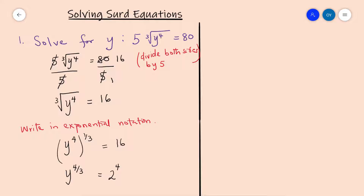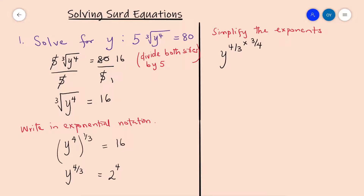The next step is to simplify the exponent. We multiply the power 4 over 3 by its reciprocal, 3 over 4, doing this on both sides. So we have 2 to the power of 4 multiplied by 3 over 4. We want to get rid of the 4 over 3 here — we want to make it 1, which is why we multiply by the inverse.